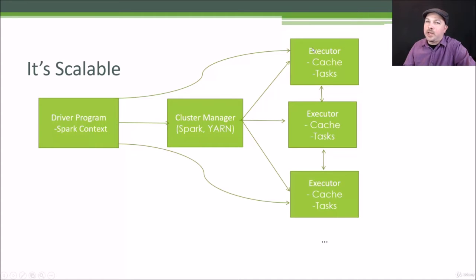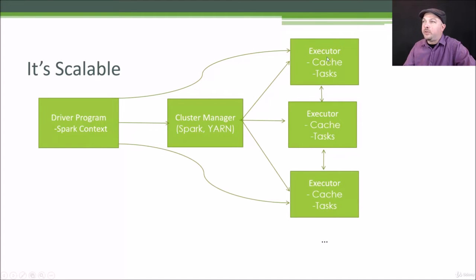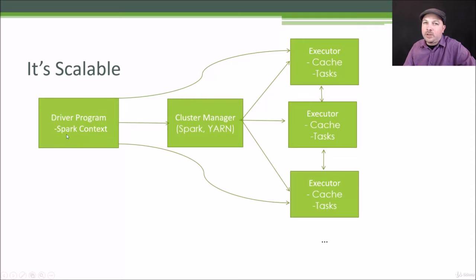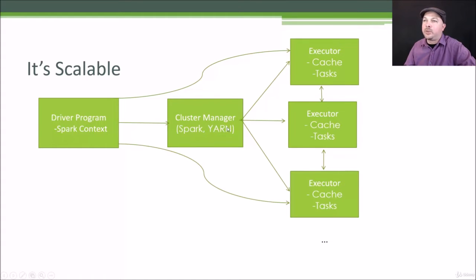Within a cluster, you might have individual executor tasks that are running — on different computers or on different cores of the same computer. They each have their own individual cache and their own individual tasks. The driver program, the Spark context, and the cluster manager work together to coordinate all this effort and return a final result back to you. All you have to do is write a script that uses a Spark context to describe at a high level the processing you want to do on the data, and Spark figures out how to spread and distribute it.